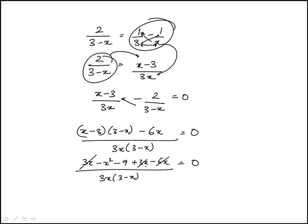3x plus 3x is 6x minus 6x, that's 0. So this becomes, I'll bring it up here, is minus x squared minus 9 over 3x.